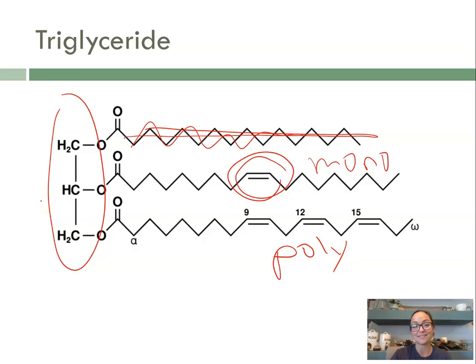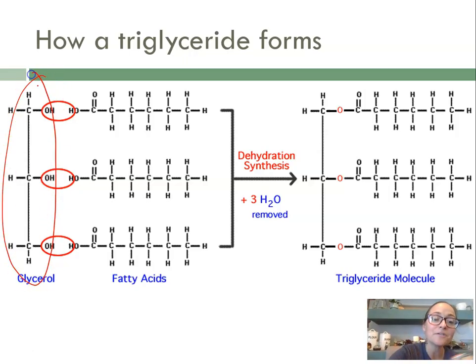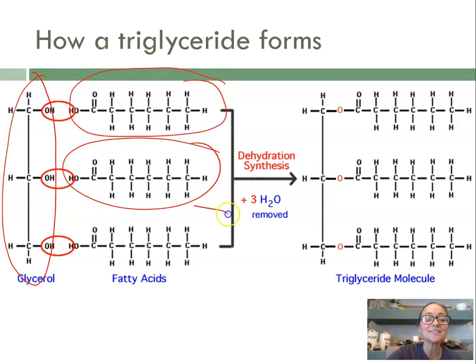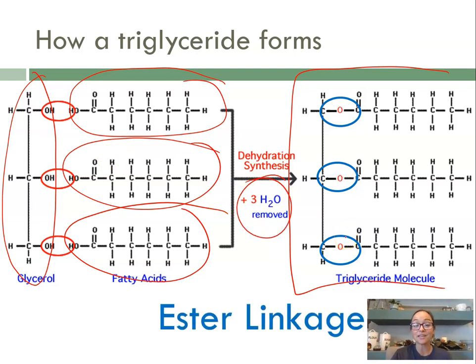How do triglycerides form? Just like we've seen when we build a polypeptide or a polysaccharide, now we get to lipids. Lipids aren't built in repeating monomers like proteins, carbs, or DNA are, but they are still built with dehydration synthesis. We can take our glycerol molecule and then a fatty acid, another fatty acid, and a third fatty acid, and we can undergo dehydration synthesis to build one large triglyceride.